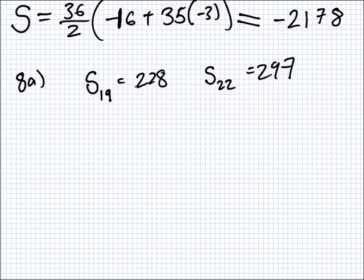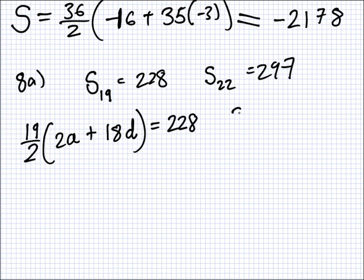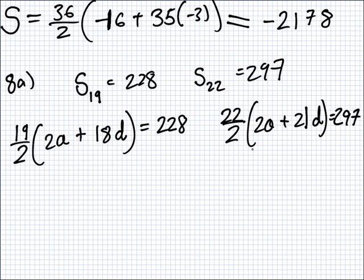So, let's use our formula. What formula do I need here for this one? N over 2. The N over 2 one. So, that's 19 over 2, 2A, which I don't know A, plus N minus 1, 18, D. That should equal 228. And, likewise here, N over 2, 2A, plus 21D, should equal 297.